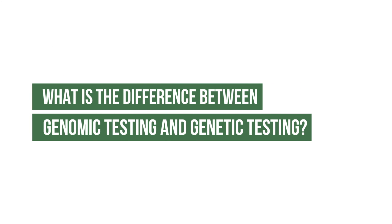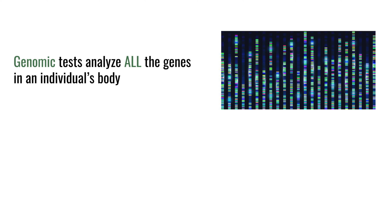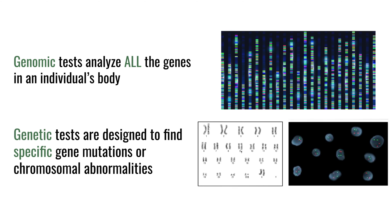What is the difference between genomic testing and genetic testing? Every cell has got 23 pairs of chromosomes, and on those chromosomes are the genes. When we talk about genomics, we talk about all of the genes in a cell. And when we talk about genetics or genetic testing, we talk about looking at individual genes.